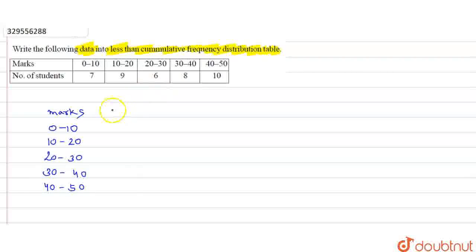And the number of students is given. That is, number of students. So what is the number of students? This is frequency. So basically, our frequency is 7, 9, 6, 8, 10. Okay? This is our frequency.